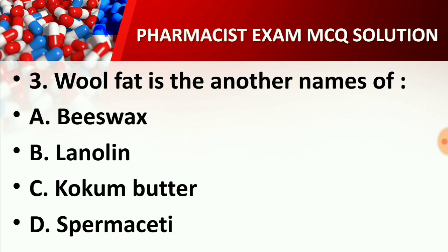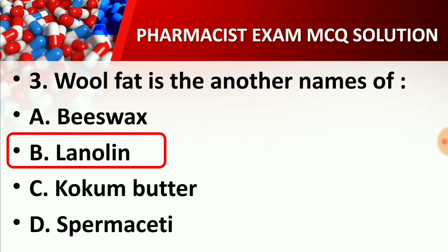Question number three: Wool fat is another name of — Option A: Beeswax, Option B: Lanolin, Option C: Cocoa butter, Option D: Spermaceti. The right answer is Option B: Lanolin. Wool fat, known as lanolin, is used as a base in ointments, suppositories, cold creams, and vanishing creams — semi-solid dosage forms.